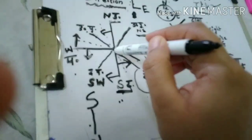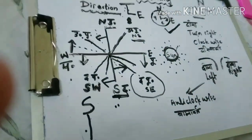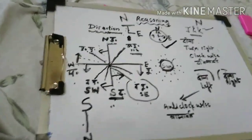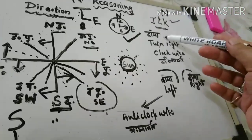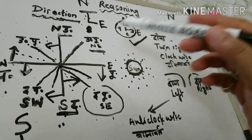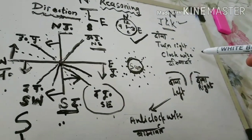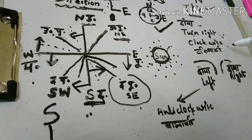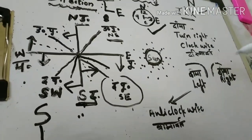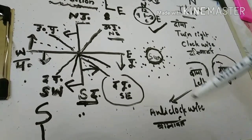Sometimes a problem arises about what is right and what is left. For example, if a person is standing facing east and he turns right - clockwise or dakshinavart - we get confused about what is right and what is left.